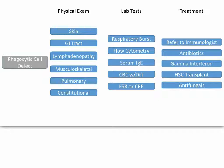I get most of these algorithms from the Primary Immunodeficiency Foundation, and they'll often say to refer to an immunologist — which I think is smart if you're not an immunologist, but some of you will be well-versed in immunology someday. Treatments for phagocytic defects can include antibiotics, gamma interferons, hematopoietic stem cell transplants, and antifungals depending on the specific deficiency and symptoms.